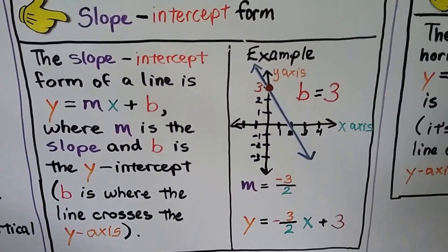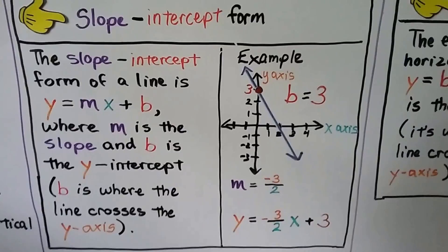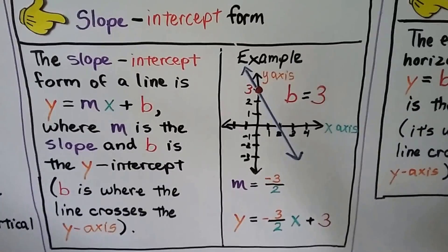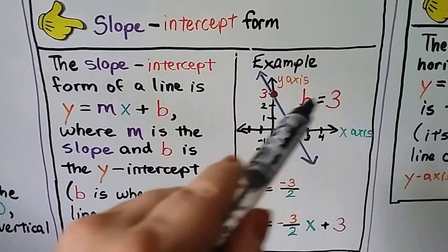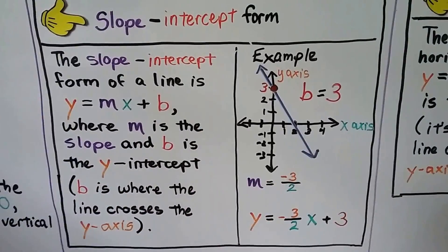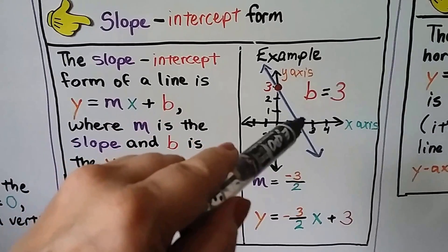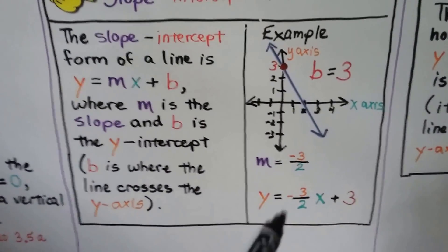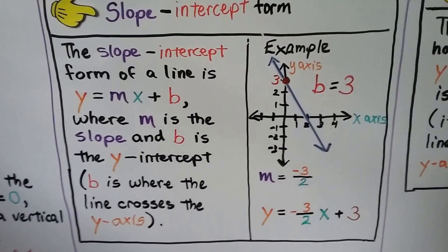For slope intercept form of a line, it's y equals mx plus b, where m is the slope and b is the y-intercept. b is where the line crosses the y-axis. If you look at this line, it's crossing the y-axis at 3, so our y-intercept b is 3. It's falling to the right, so we know it's a negative slope. We count negative 3 as our rise and 2 as our run — negative 3 halves. We know our b is 3, so we have y equals negative 3 halves x plus 3.